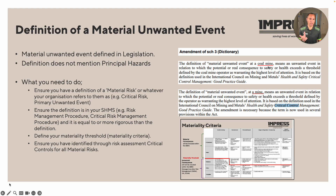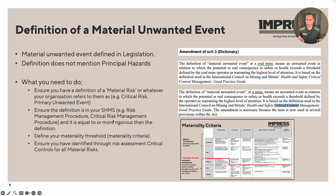These two things essentially say the same thing — this is a coal mining extract, and this is the mining quarrying extract. So what do you need to do? You need to make sure you have a definition of a material unwanted event, or a material risk, critical risk, primary unwanted event — whatever it might be — and ensure the definition lives somewhere in your safety and health management system. It could be in the risk management procedure or critical risk management procedure, and it must be equal to or more rigorous than what is provided in the legislation.